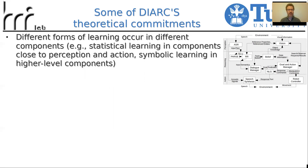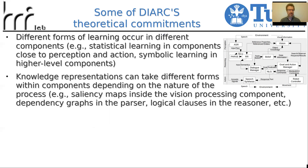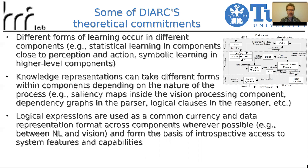Different forms of learning can occur in different components — there is not just one architectural learning algorithm. Statistical learning occurs in components close to perception and action; symbolic learning occurs in high-level components such as the task planner or reasoner. Knowledge representations can take different forms within components: the vision system might have saliency maps and textures, the parser might have dependency graphs, and the reasoner might have logical clauses and rules. Logical expressions are used as the common currency exchanged between components, independent of the internal data representation.